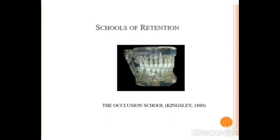For many years, clinicians did not agree about the need for retention, but over the years different people came up with different philosophies. They say that if you achieve certain characteristic features post-treatment, your results will be stable. These sets of different philosophies are called schools of retention. The first one is the occlusion school by Kingsley, who stated that occlusion is the most important factor in determining stability in a new position — that is, when you have a perfect occlusion with perfect intercuspation, your post-treatment stability will be much greater.